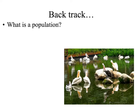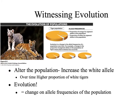Let's back up for a minute and look at a population. Populations are groups of organisms of the same species that are found in the same location, and generally these organisms are able to interbreed. Populations are what are going to evolve. In this example we see a population of tigers and there are very few white tigers. Over time, especially in captivity, we see that the proportion or frequency of the white tigers increases. This is a type of evolution.